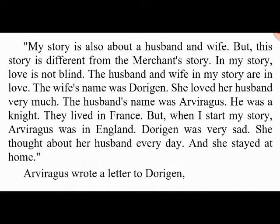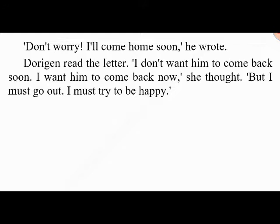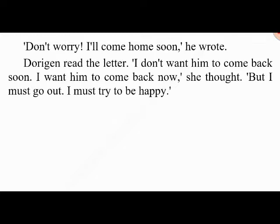The husband's name was Arviragus — he was a knight. They lived in France, but when the story begins Arviragus was in England. Dorigen was very sad; she thought about her husband every day and stayed at home. Arviragus wrote a letter: 'Don't worry — I'll come home soon.' Dorigen read the letter: 'I don't want him to come back soon — I want him to come back now. But I must go out; I must try to be happy.'